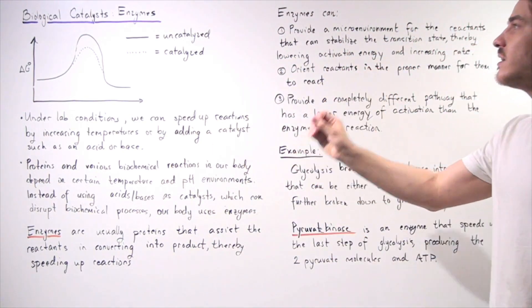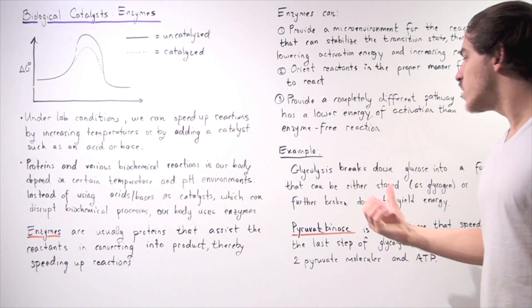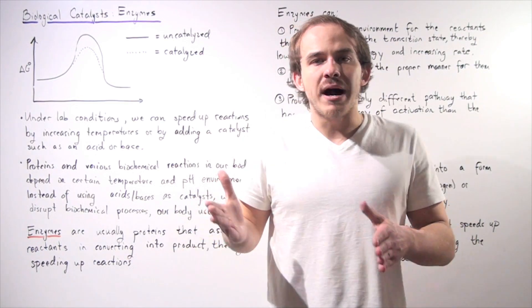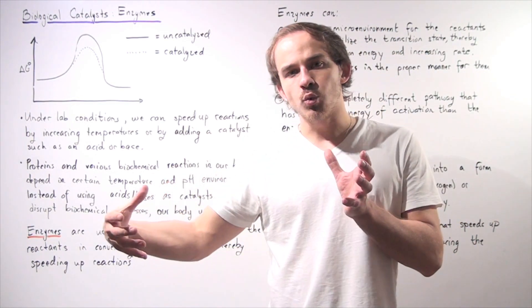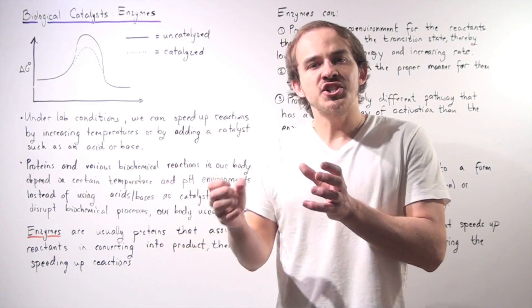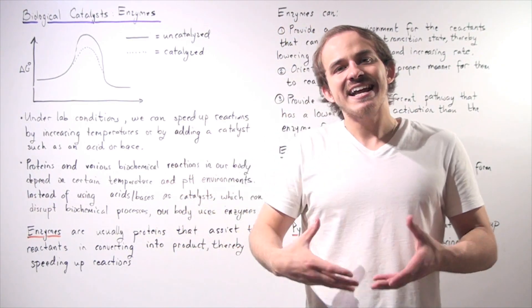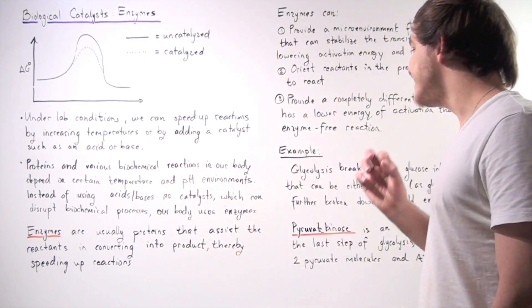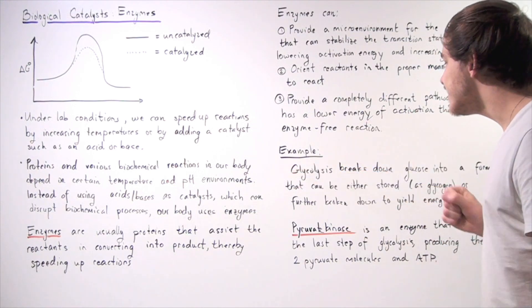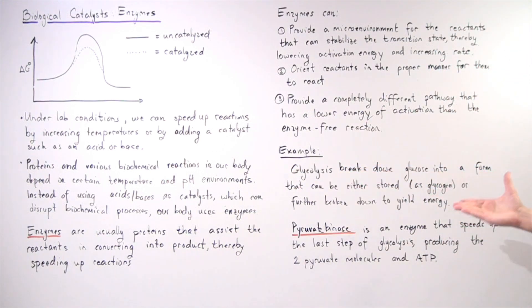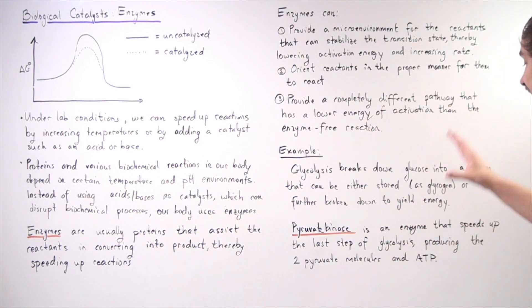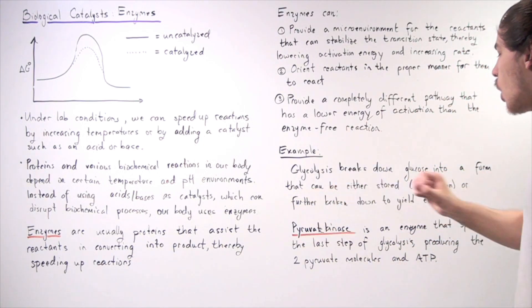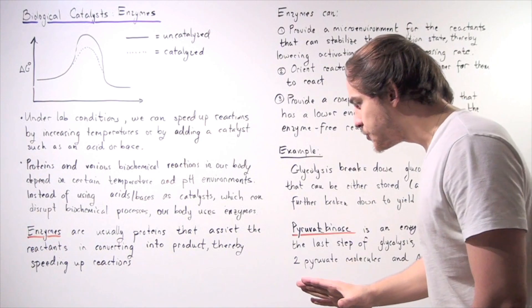Let's look at an example of a biological enzyme. Glycolysis is the process by which glucose is broken down into its constituents, into its components, which can then be used to create energy in the form of ATP. So glycolysis breaks down glucose into a form that can be either stored as glycogen or further broken down to yield energy.